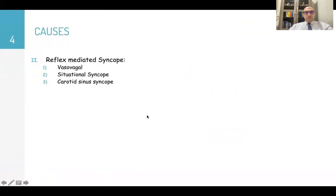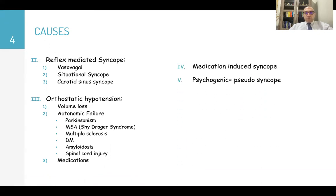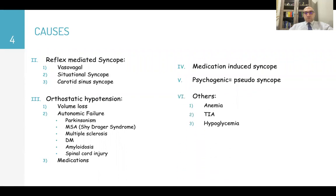Other causes include reflex-mediated syncope like vasovagal syncope, situational syncope, and carotid sinus hypersensitivity. Orthostatic hypotension may cause syncope with volume loss or autonomic nervous system failure, as in Parkinsonism, multisystem atrophy, multiple sclerosis, diabetes mellitus, amyloidosis, and spinal cord injuries. Many medications can also cause orthostatic hypotension. There is also medication-induced syncope, psychogenic syncope or pseudosyncope, and other causes like anemia, transient ischemic attacks, and hypoglycemia.